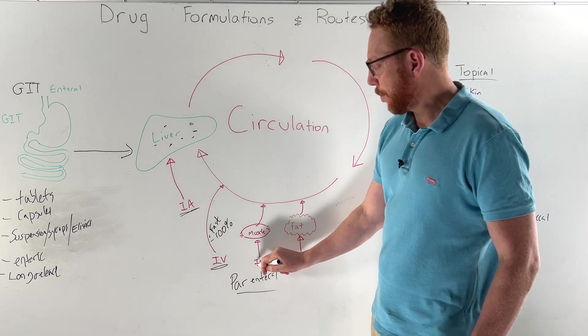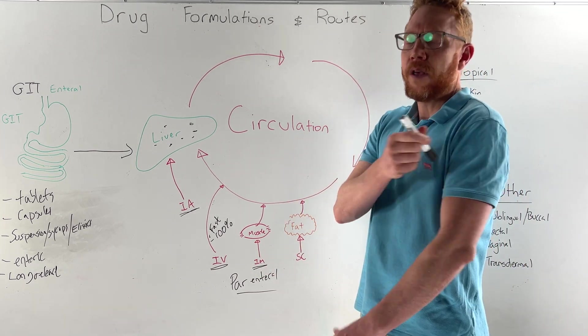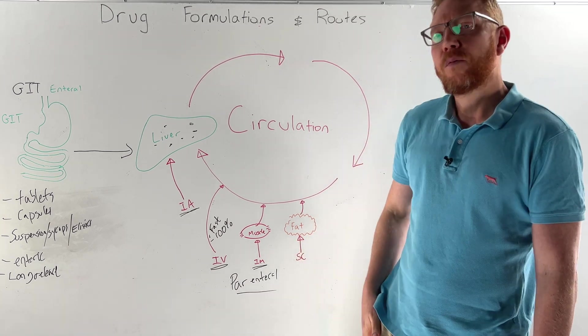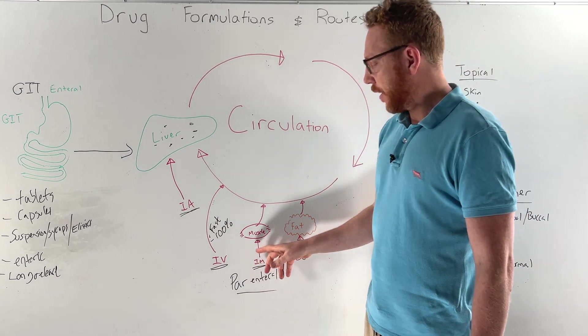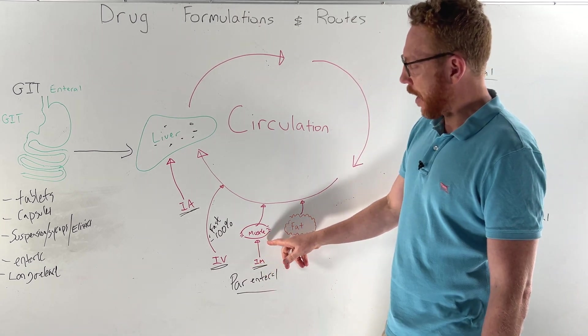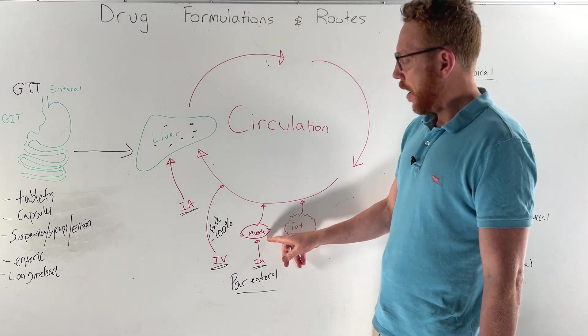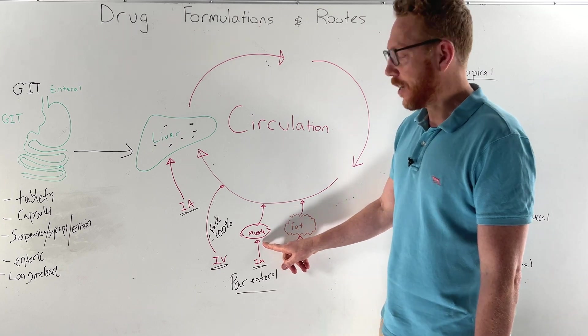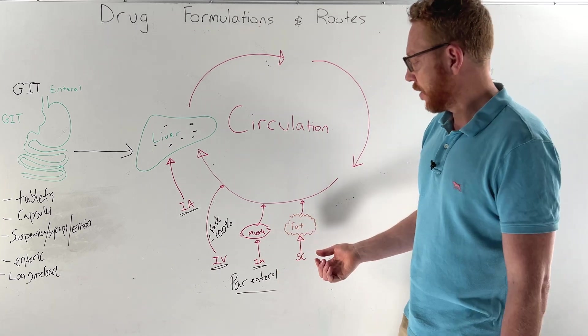Then we move to intramuscular, meaning the injection is put straight into the muscle. A common location is the deltoid muscle or possibly the quadricep muscles or gluteal muscles. The advantages here - you can apply a greater volume of medications, at least compared to subcutaneous, and it gets fairly good absorption into the circulation. Common drugs given intramuscularly would be vaccines as an example.